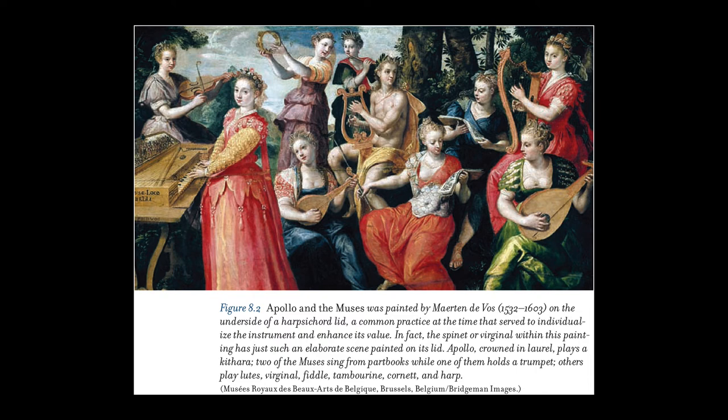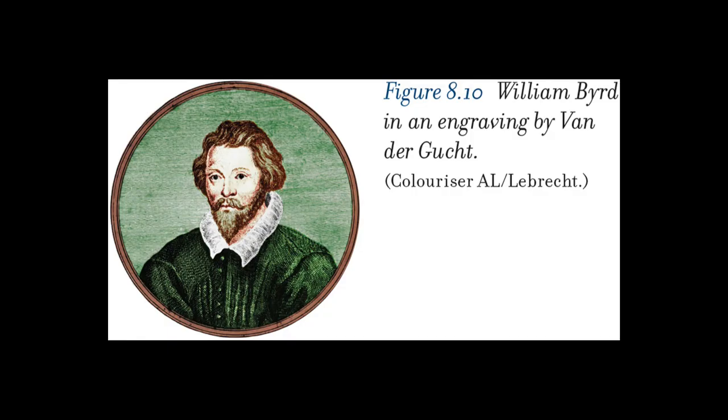Variation form was a 16th century invention in which a given theme was followed by a series of variations on that theme. Some musicians wrote and improvised variations on repeated bass lines or on standard airs for singing verses, such as Guardame, Las Vacas, and the Romanesca. English virginalists of the late 16th and early 17th centuries, such as William Byrd, cultivated the variation primarily using dances or familiar songs as their themes.